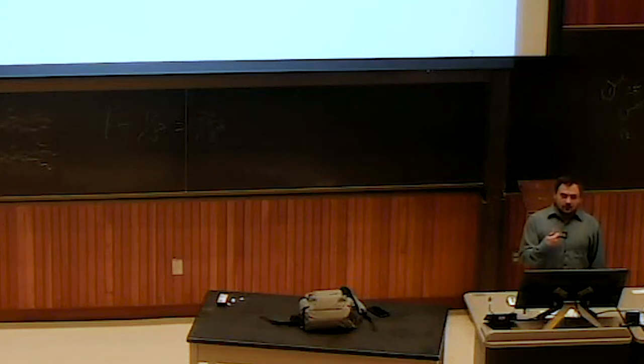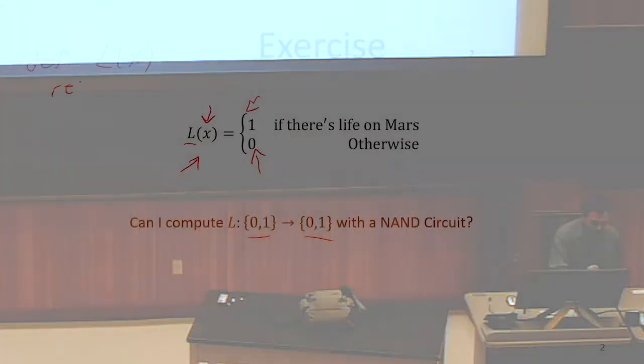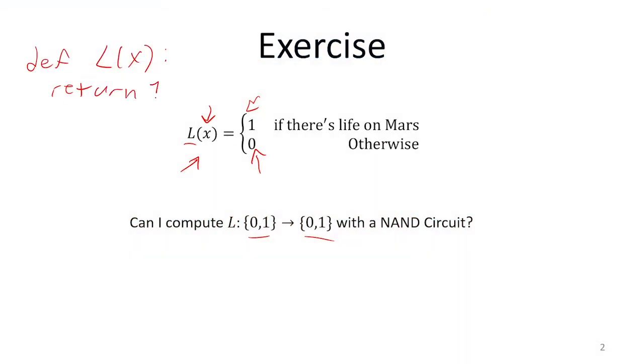I don't know which one it is, but I know it's one of those two. There are two options, and I can implement either option. So it's either going to be like return one, or alternatively, if there isn't life on Mars, then I can implement this function by saying return zero.